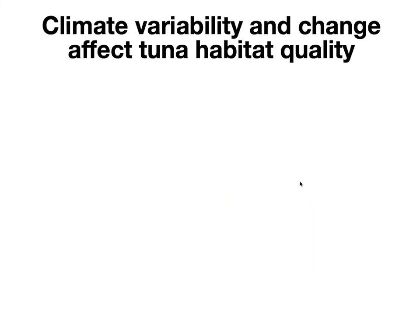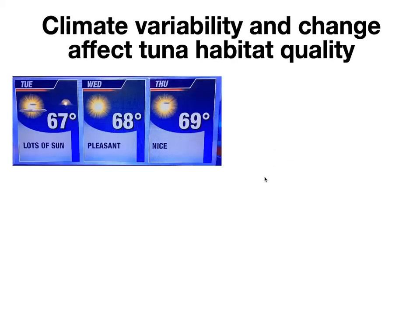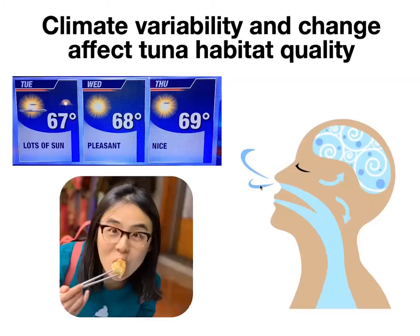Because of the importance of tuna here, we want to better understand how climate variability and change might affect tuna spatial distributions and catches. One of the biggest ways climate can affect tuna fisheries is by altering the quality of tuna habitat. Temperature, oxygen, and availability of food are the most important determinants of habitat quality. Everybody has a desired temperature range, has to eat and breathe — tuna are no different.